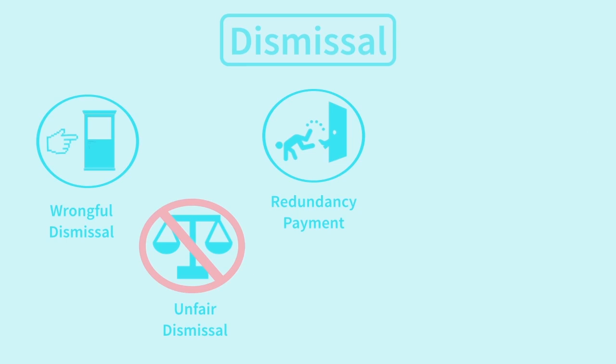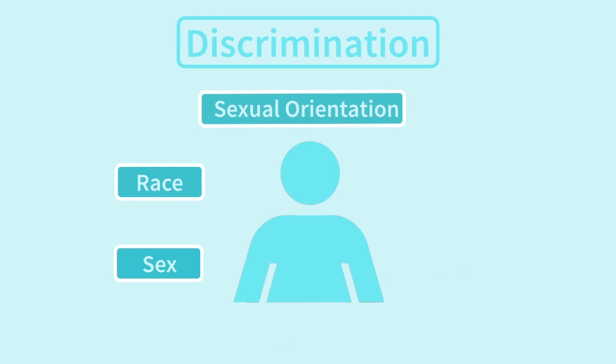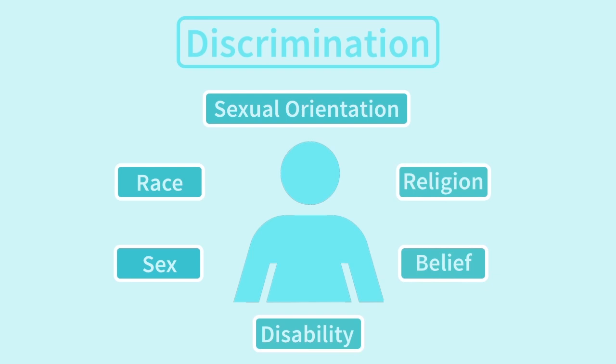Dismissal can give rise to a number of different claims under UK law. The principal claims that may arise on termination of employment are: wrongful dismissal, unfair dismissal, a claim for a redundancy payment, a claim arising out of failure to give written reasons for dismissal, and a claim for discrimination on the grounds of sex, race, sexual orientation, disability, or religion or belief.